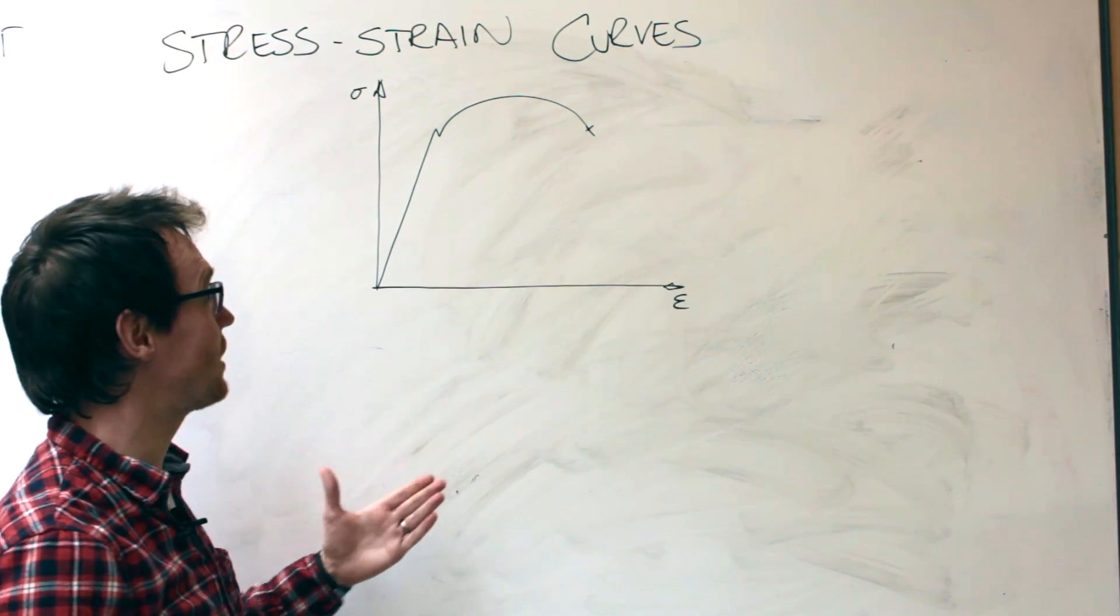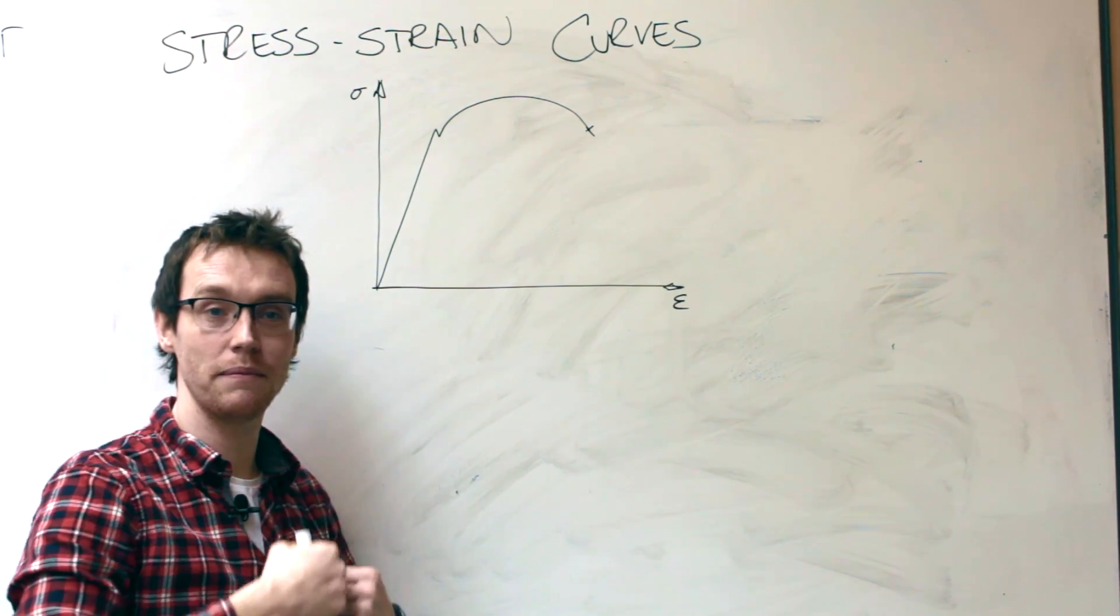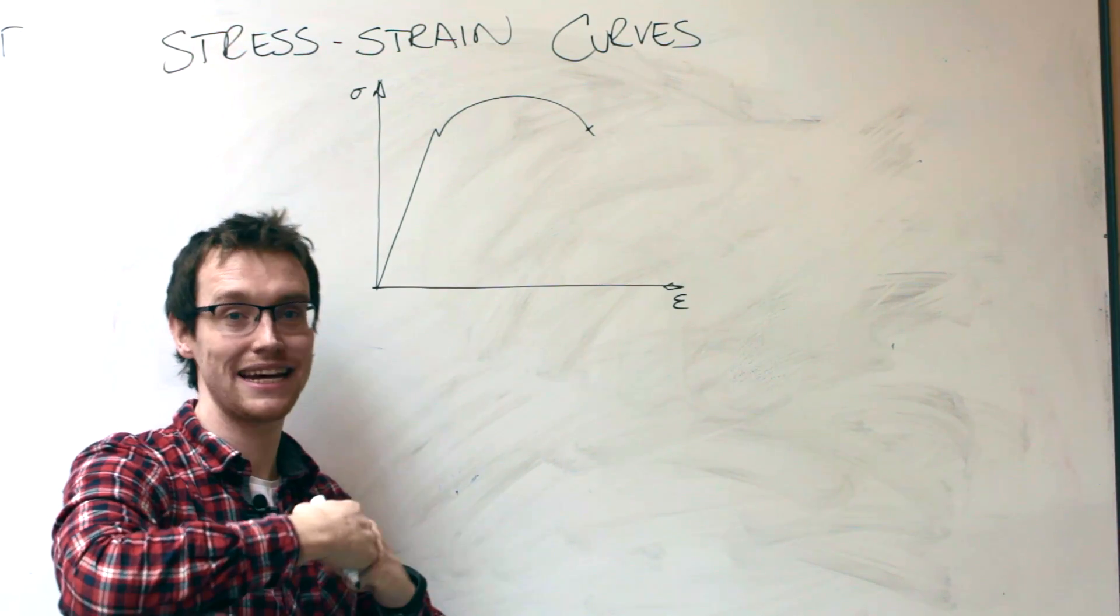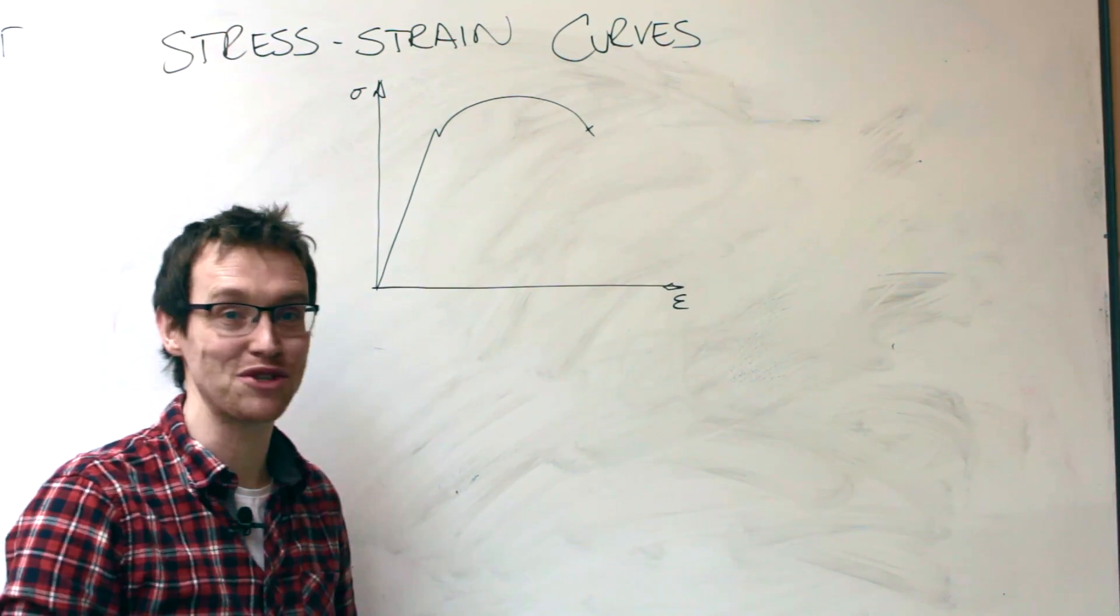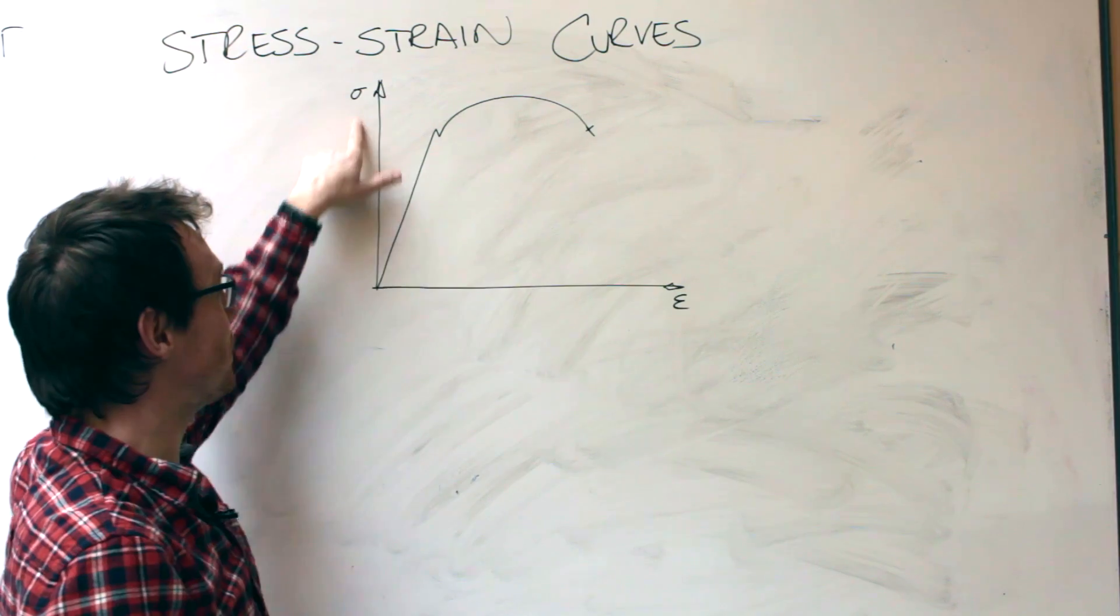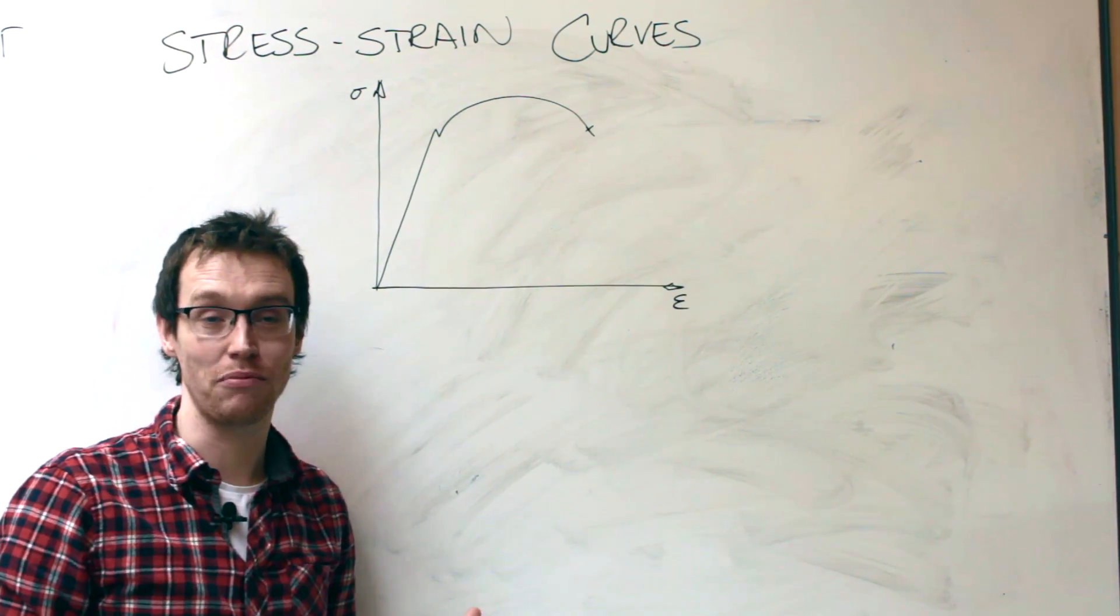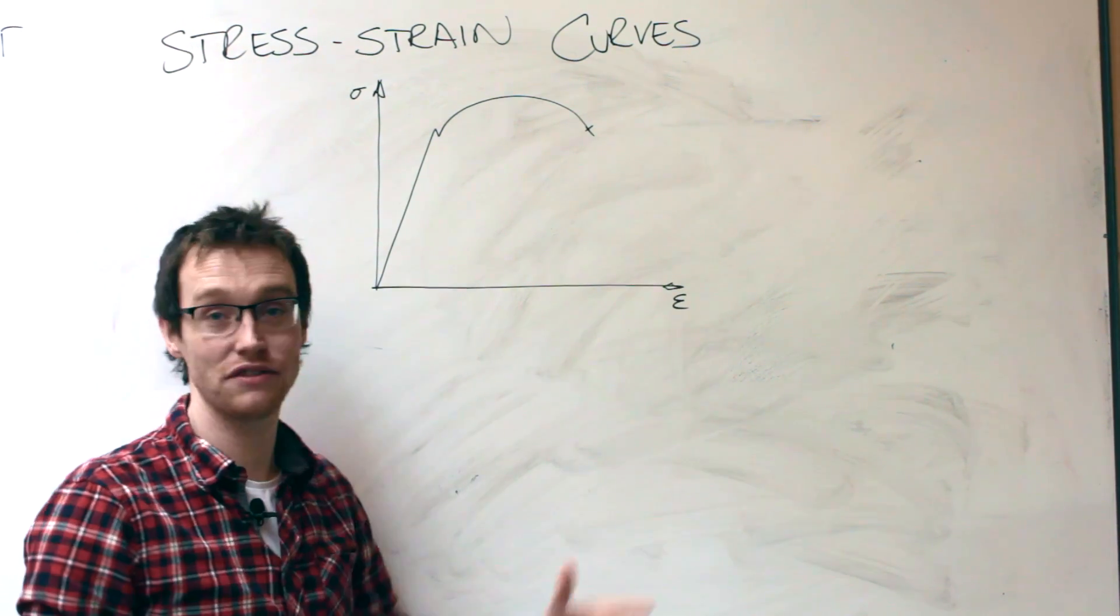So this is a stress-strain curve. It's a plot of when a material is stretched or put under a tensile force, the proper name for stretching, and we plot the stress, which is a fancy word for pressure, against the strain, which is a fancy word for extension.